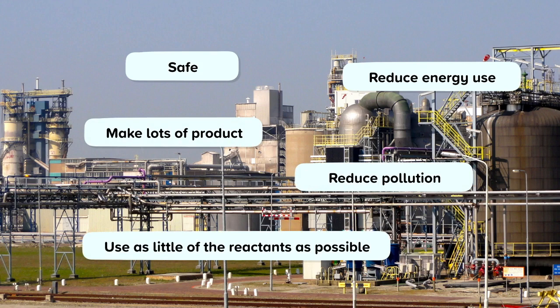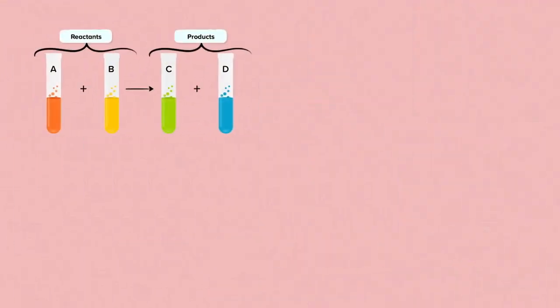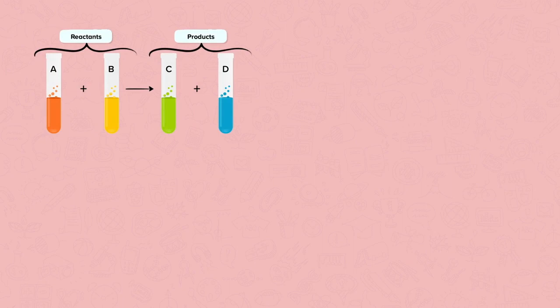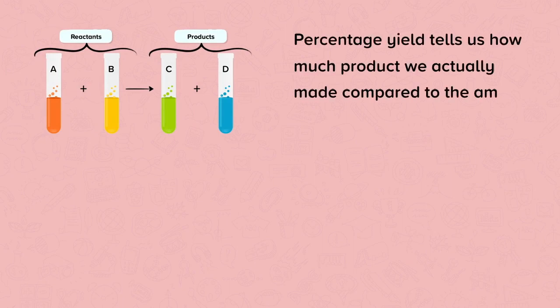Resources are often finite and will run out one day, so it's important that we use as little of the reactants as possible. If we made 40 grams of chemical C when we were expecting 50 grams, we can calculate the percentage yield. The percentage yield tells us how much product we actually made compared to the amount of product we calculated would be made. Chemical engineers also calculate something called the atom economy.